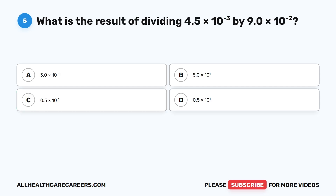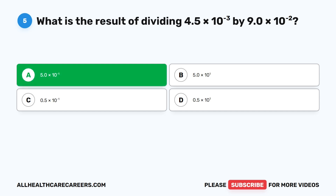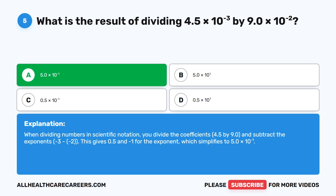Question five. What is the result of dividing 4.5 times 10 to the power of negative 3 by 9.0 times 10 to the power of negative 2? A. 5.0 times 10 to the power of negative 1. B. 5.0 times 10 to the power of 1. C. 0.5 times 10 to the power of negative 1. D. 0.5 times 10 to the power of 1. The correct answer is A. When dividing in scientific notation, divide the coefficients (4.5 by 9.0) and subtract the exponents (negative 3 minus negative 2), giving 0.5 and exponent negative 1, which simplifies to 5.0 times 10 to the power of negative 1.